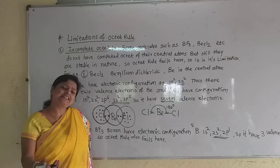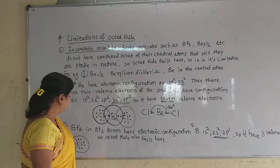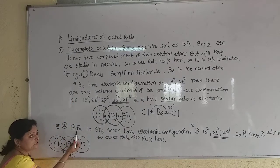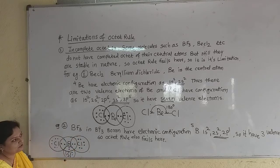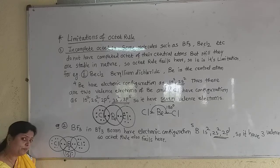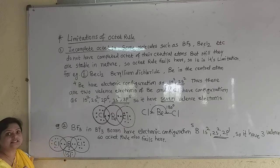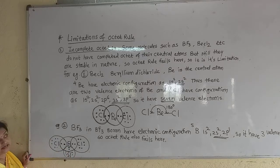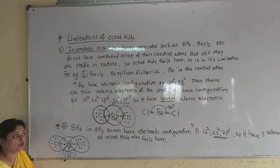Now come to the second example, that is boron trifluoride. In this molecule, boron is the central atom and boron has atomic number 5. So the electronic configuration of boron is 1s2, 2s2, 2p1. Now the valence shell — that is the second main shell — contains only 3 electrons, that is the valence electrons. The 3 valence electrons are shown by dots around this boron. And there are 3 fluorine molecules. Fluorine has the electronic configuration 1s2, 2s2, 2p5.